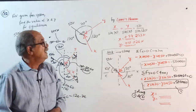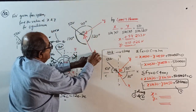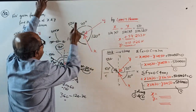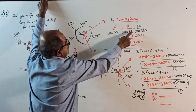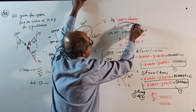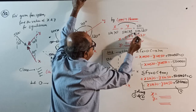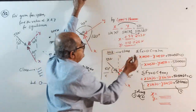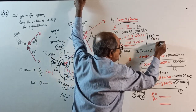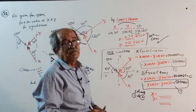By Lamy's theorem: X / sin(70) = Y / sin(170) = 50 / sin(120). Use the first and third to get X, and use the second and third to get Y.